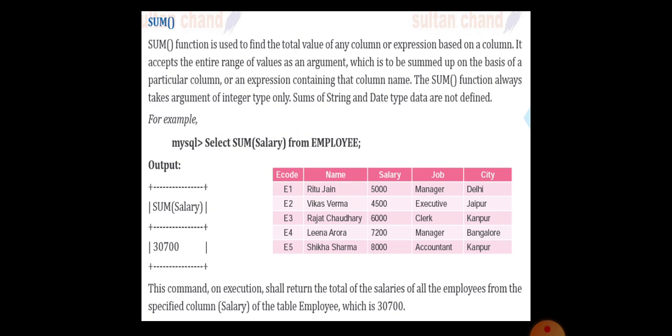Coming to the sum of salary. It is nothing but the total value of any column or expression based on a column. It accepts the entire range of values as an argument which is to be summed up on the basis of a particular column or an expression containing that column name. The SUM function always takes argument of integer type only. Sum of string and date type are not defined yet. So if you are giving the query like this, it will add 5000 plus 4500 plus 6000 plus 7200 plus 8000. You will get 30700 as a result. This command on execution shall return a total of salaries of all employees from the specified column Salary of the table Employee, which is 30700.